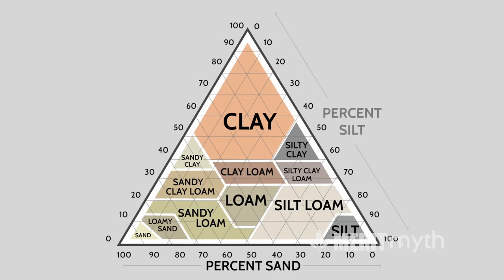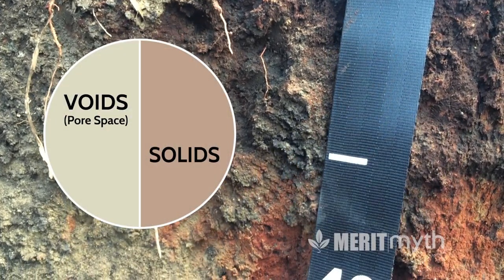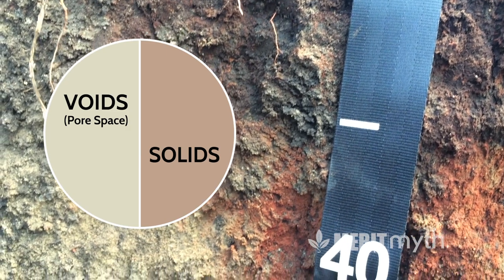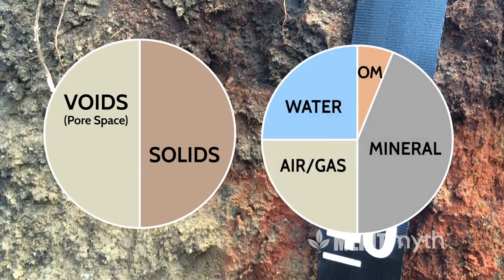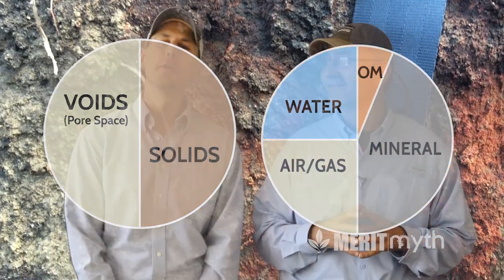The dirt is the solid part of the soil. It turns out that only 50% of a good soil's volume is actually made up of solids. But what does that look like? After all, soils don't behave like pie charts.